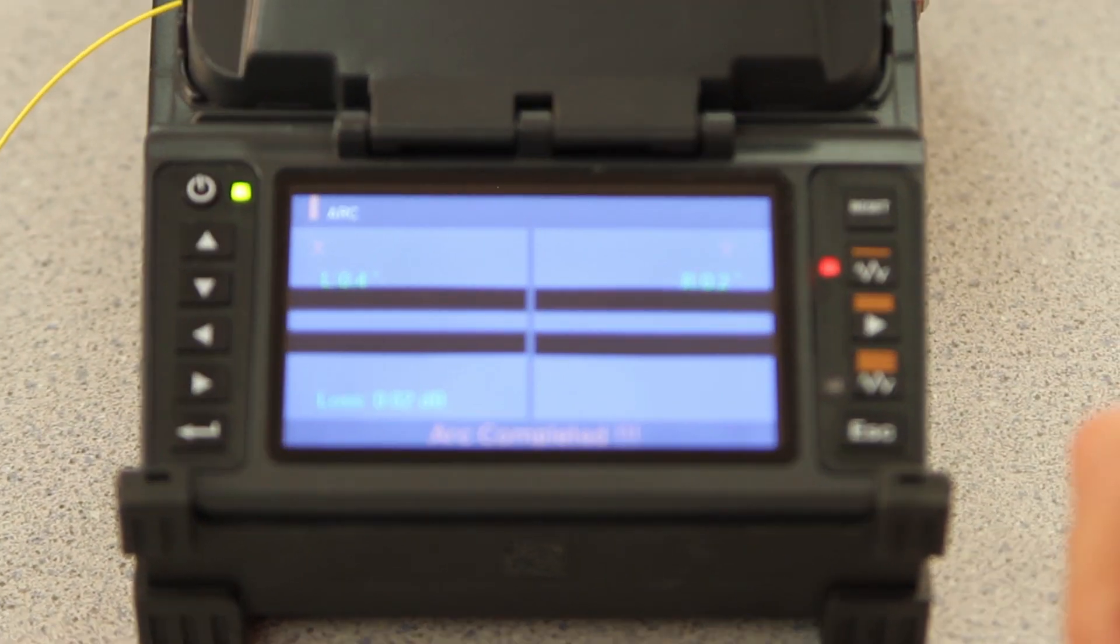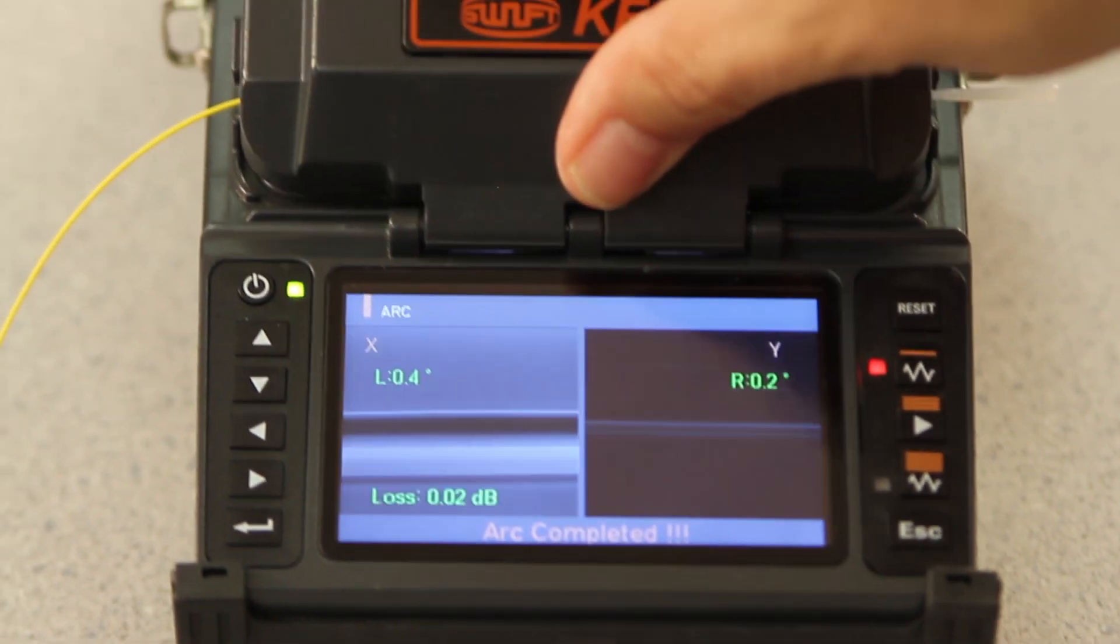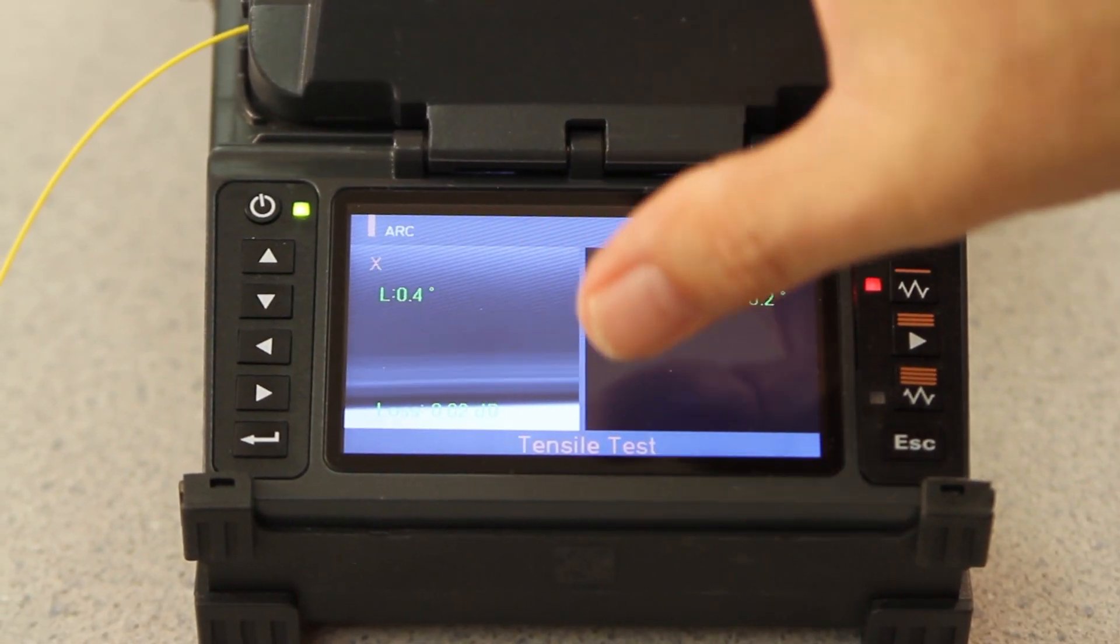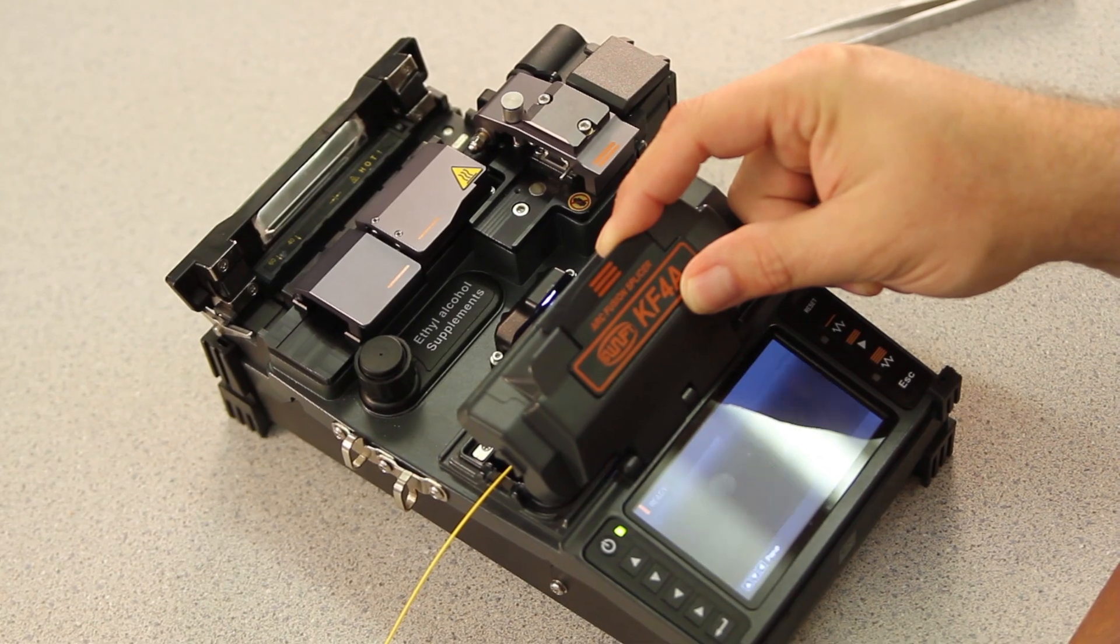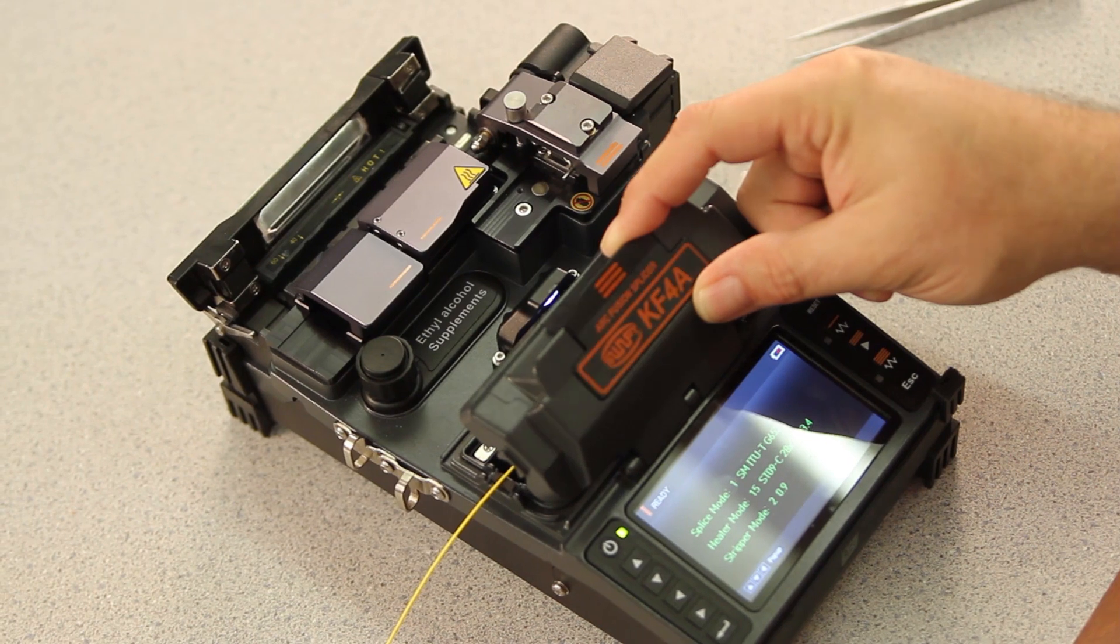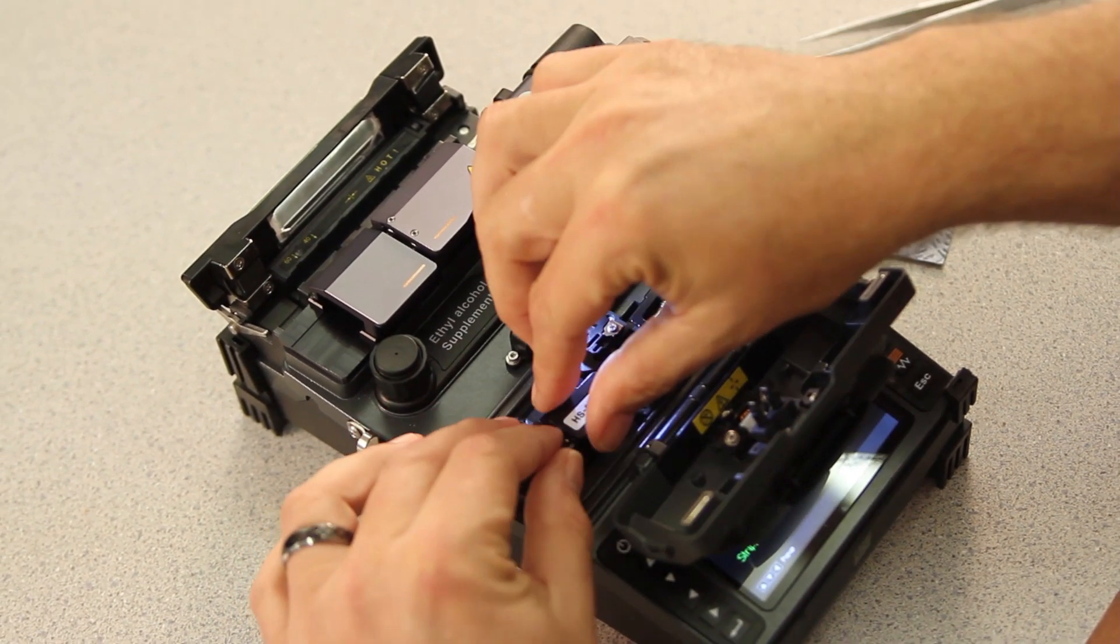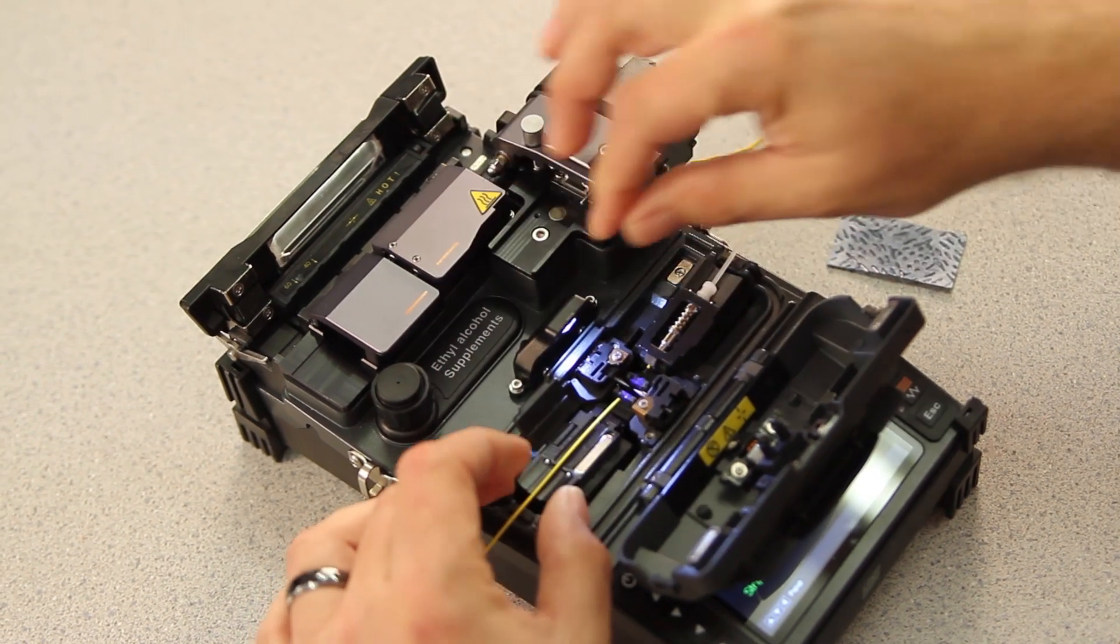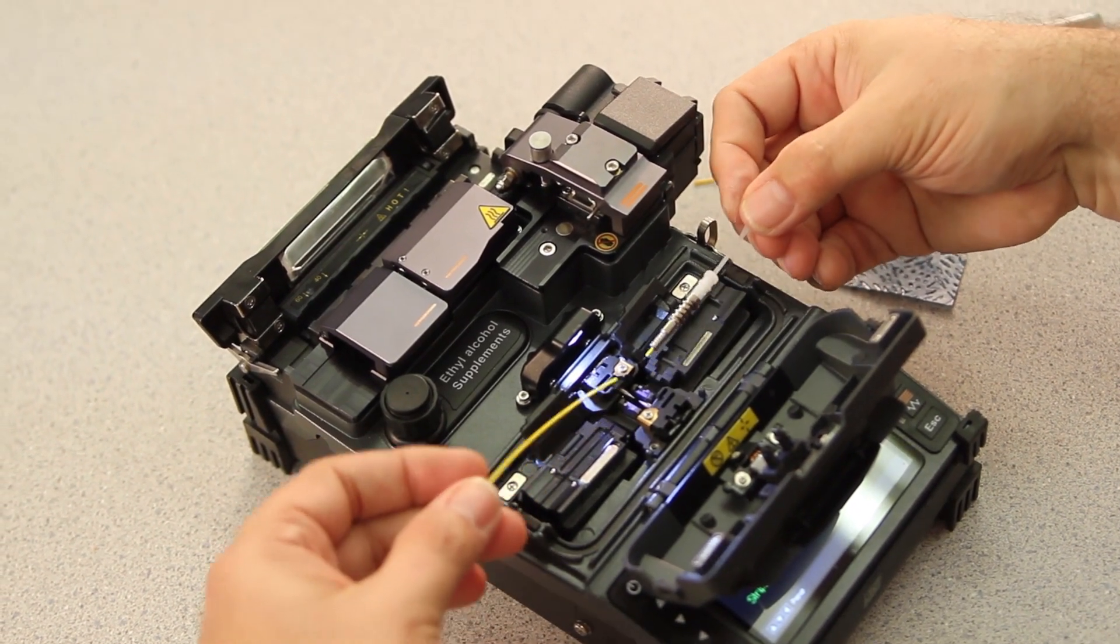Once the arc is complete and you're happy with everything, open your wind cover, allowing the tensile test to be performed. Once it comes back to your ready screen, you can fully open your wind cover. Then, open your left door, then your connector door. Remove your connector and allow it to hang freely.